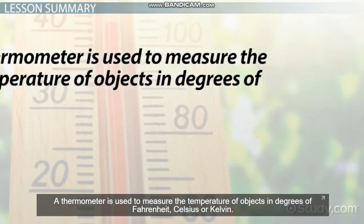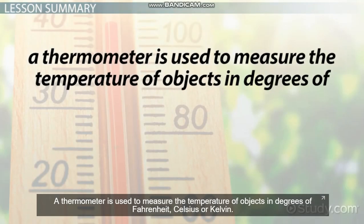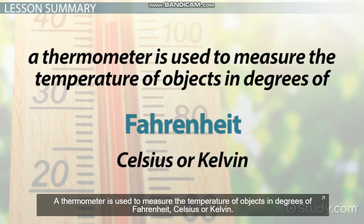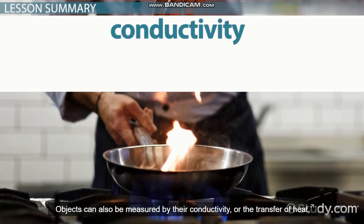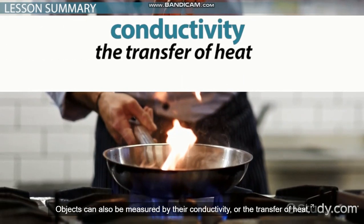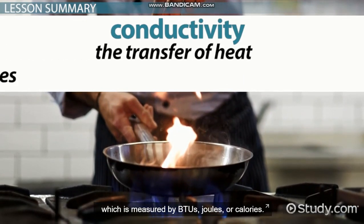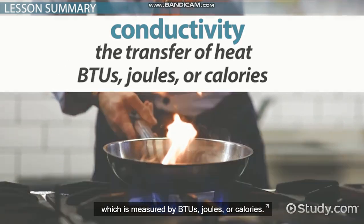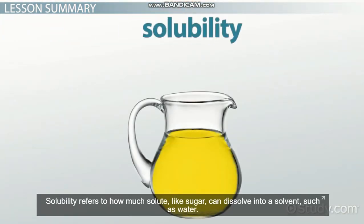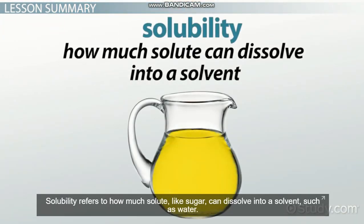A thermometer is used to measure the temperature of objects in degrees of Fahrenheit, Celsius, or Kelvin. Objects can also be measured by their conductivity, or the transfer of heat, which is measured by BTUs, joules, or calories. Solubility refers to how much solute, like sugar, can dissolve into a solvent, such as water.